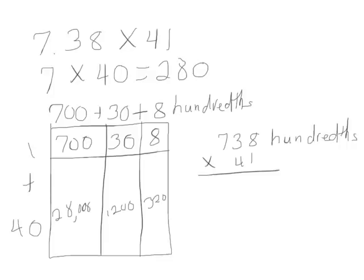Now we're going to do the standard algorithm. Continuing with using the unit form of our 7 and 38 hundredths, we're going to call it 738 hundredths, multiplying by 41. 8 times 1 is 8, 3 times 1 is 3, and 7 times 1 is 7.